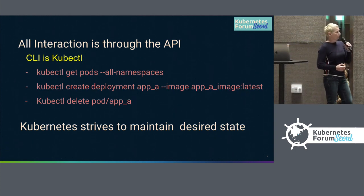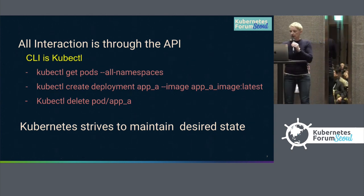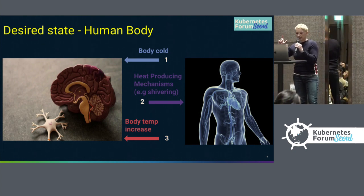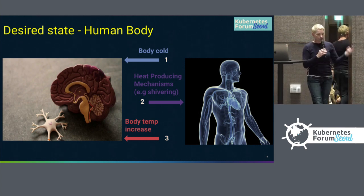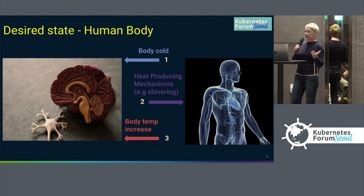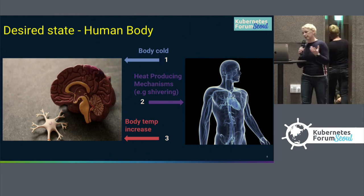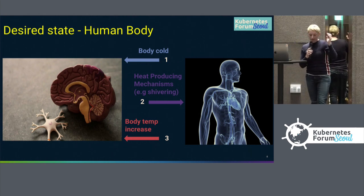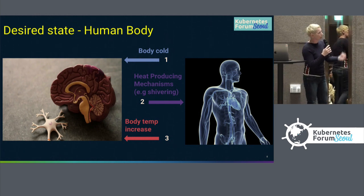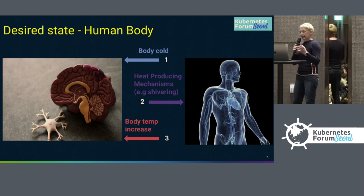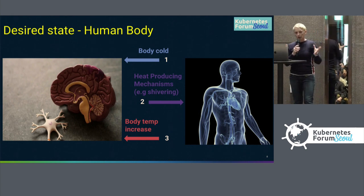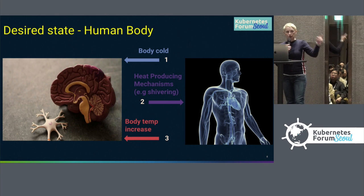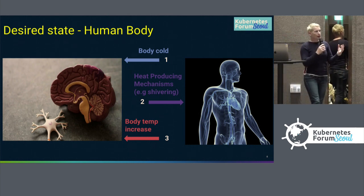The main thing to know about Kubernetes is that it always strives to maintain desired state. When I talk about desired state, I kind of relate it back to the human body. Desired state in the human body happens all the time. For example, the body gets cold — that triggers a mechanism from the brain down to the body to start doing heat-producing mechanisms like shivering, which from a kinetic energy point of view creates heat. Your body temperature starts to rise, telling the brain that the body temperature is rising back to what it should be. And that's continuously going around in a loop to make sure that the body is getting back to its desired body temperature state.